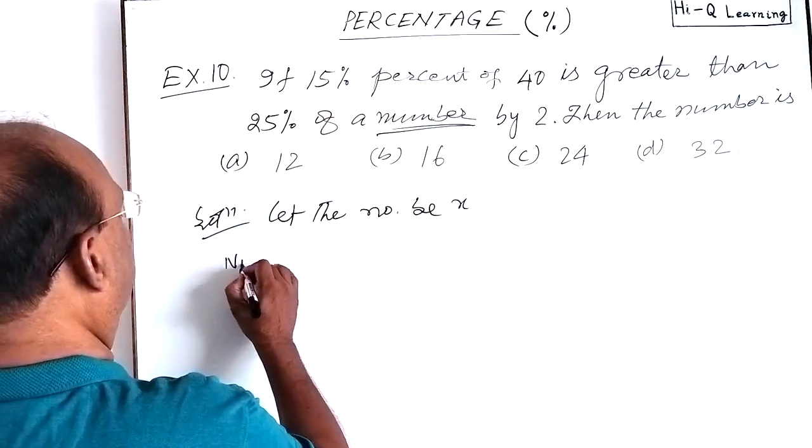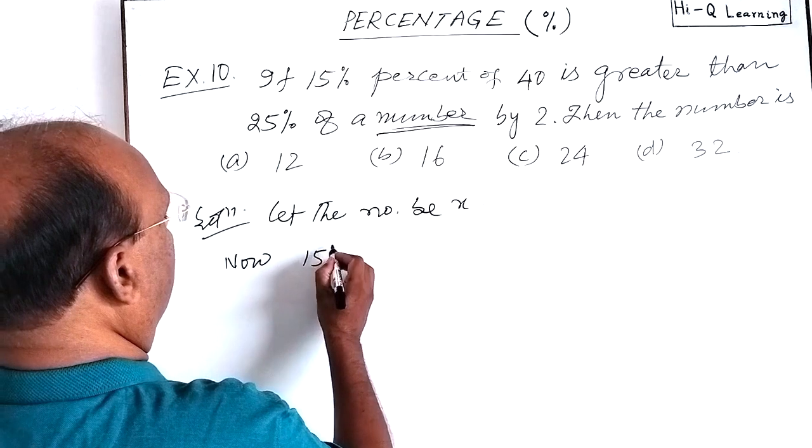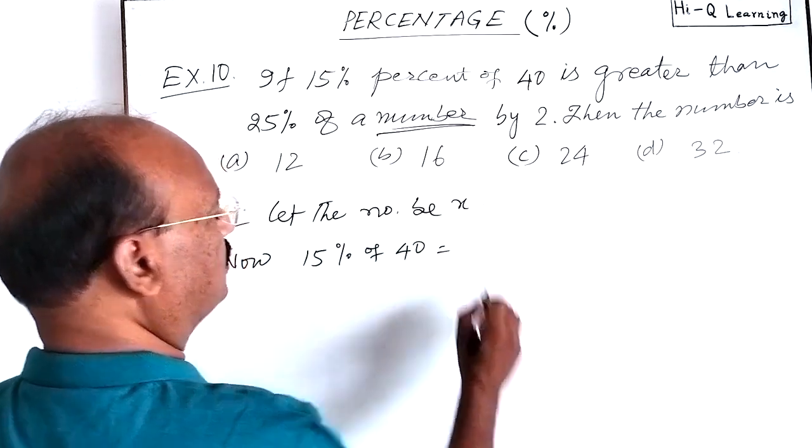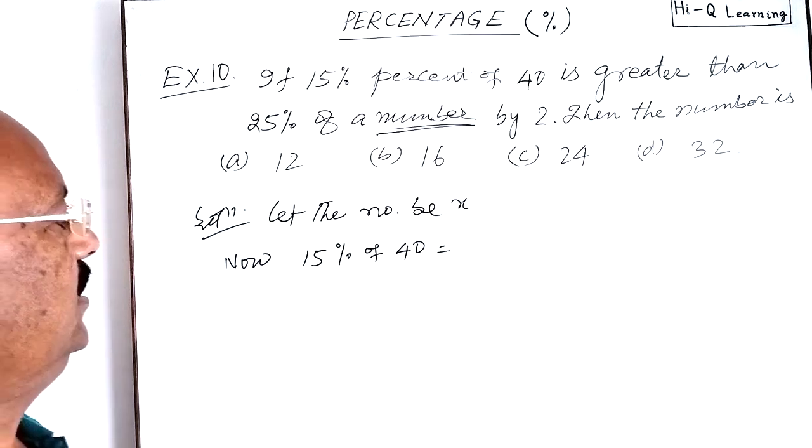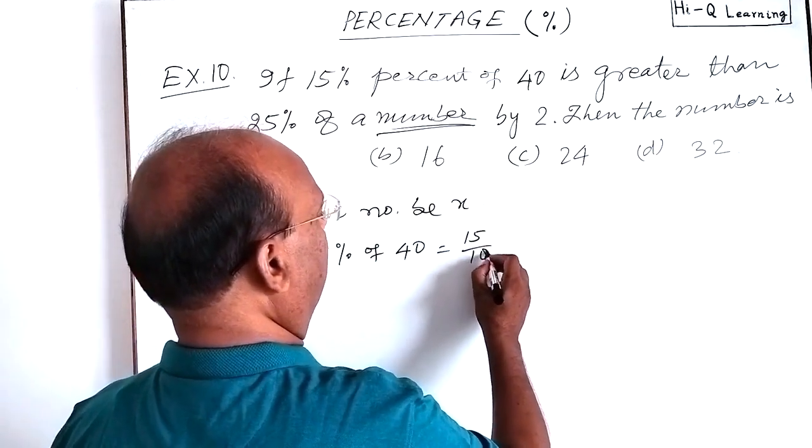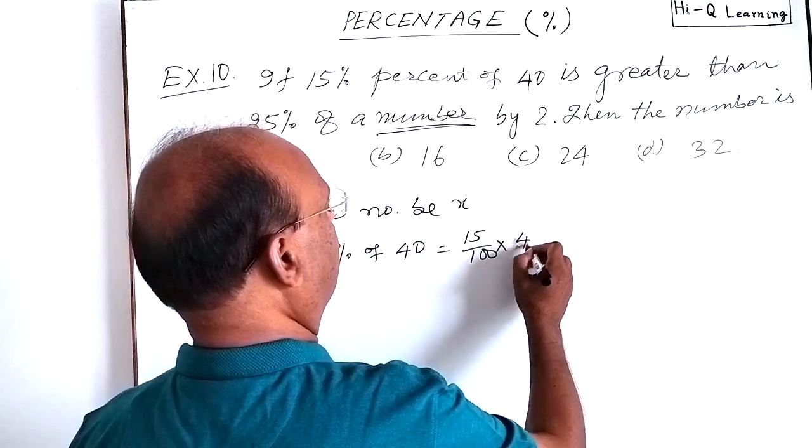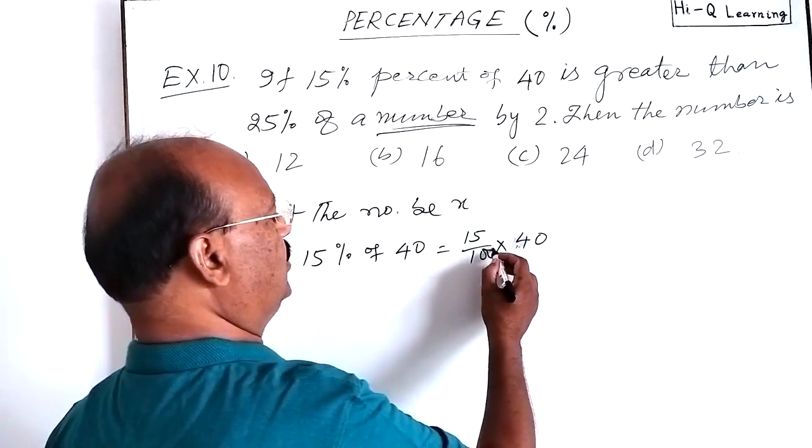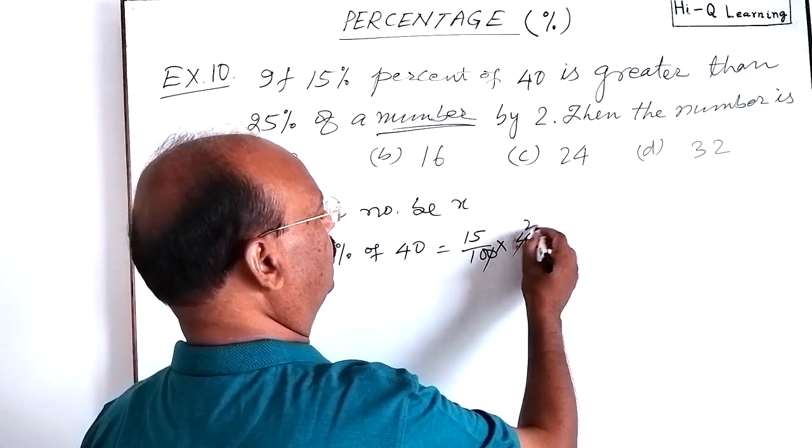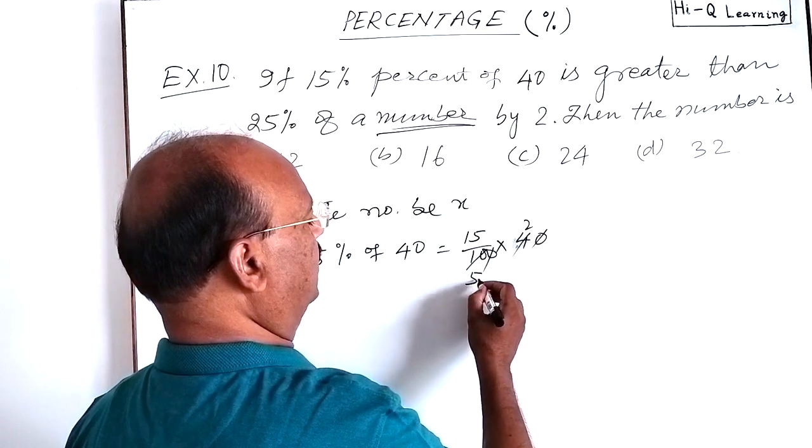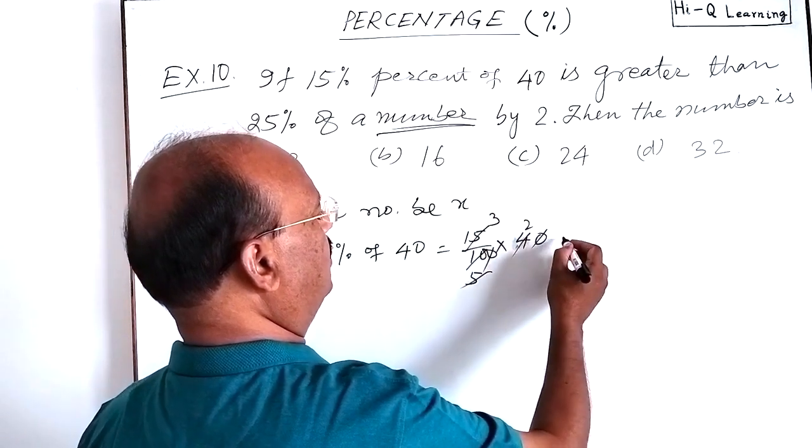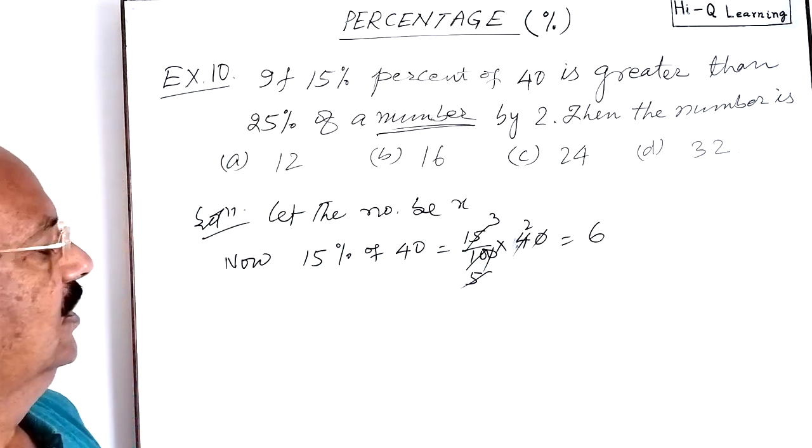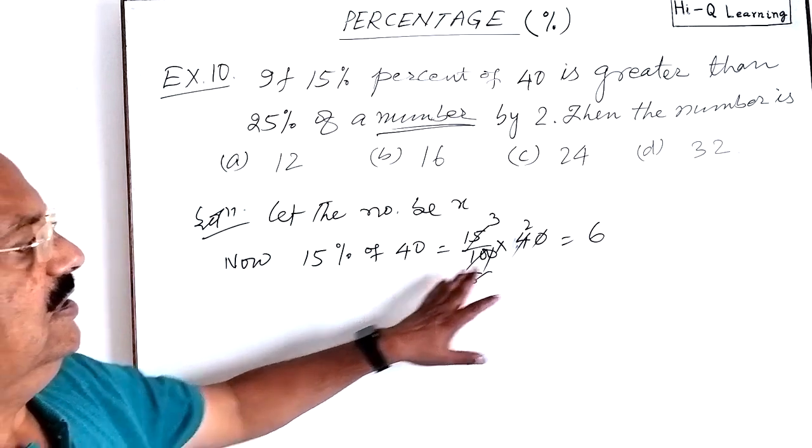Now, 15% of 40 means, let us simplify and calculate it. This is 15 by 100 into 40. Simplify it: 0 will be cancelled out. 2 2s are 4, 2 5s are 10, 5 3s are 15. This is cut to 3 into 2, that is 6. So, 15% of 40 is 6.